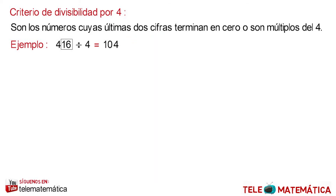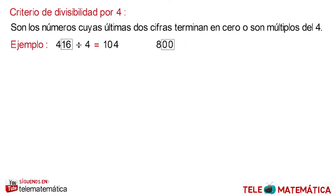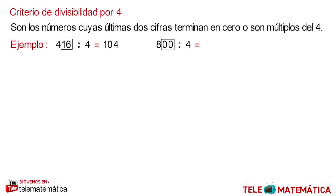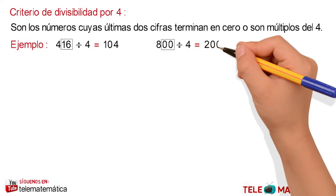Let's see another example: the number 800, whose last two numbers are 0. Then to verify, we divide this number by 4 and get as a result 200.